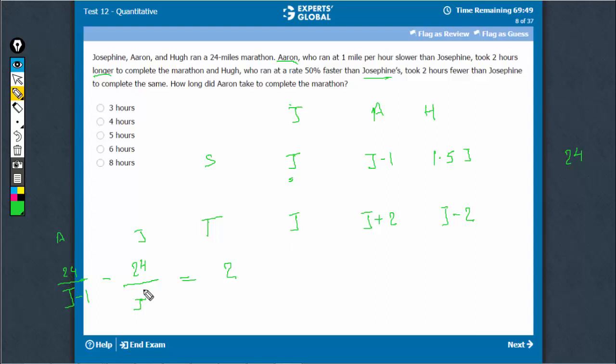Solve it for J. Quite intuitively, I can say that if J is equal to 4, then J-1 will be 3 and this will be 8 and here this will be 6, 8-6 is equal to 2. So J is equal to 4.